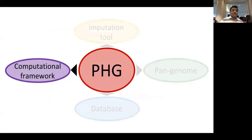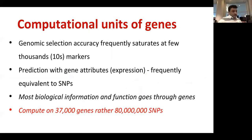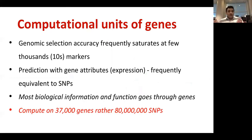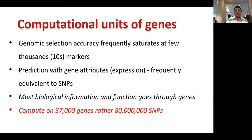Genomic selection accuracy frequently saturates at a few thousand loci, so you don't need thousands of SNPs. Most biological information goes through genes. In maize, we have 80 million SNPs. If we put that information into haplotypes at gene scale, we can represent everything with only 37,000 to 38,000 data points per individual — the information captured by 80 million SNPs is also captured by haplotypes — greatly reducing memory footprint while using only 37,000 genes for genomic selection.